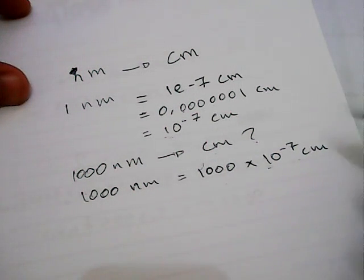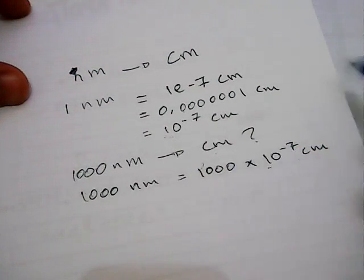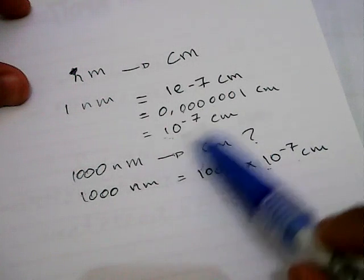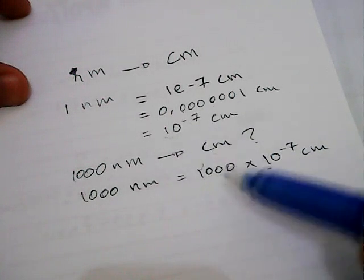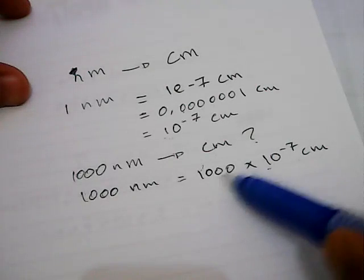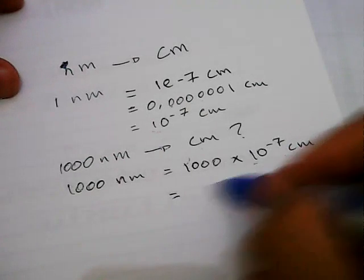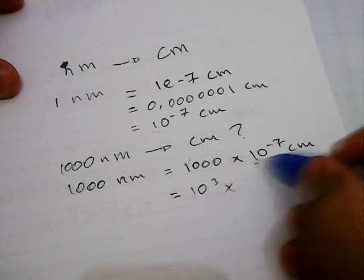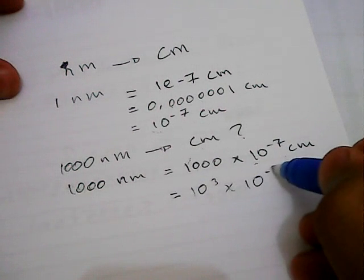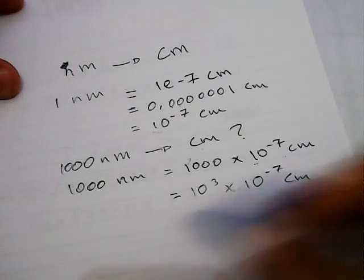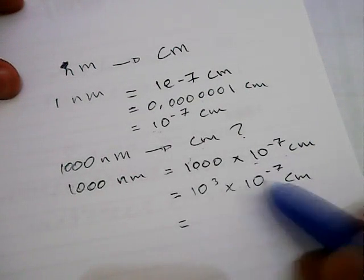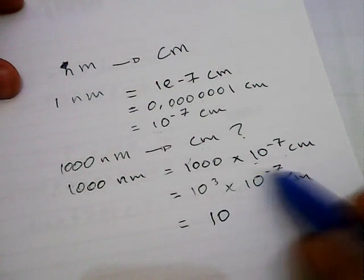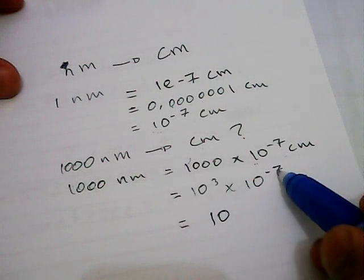Let's go ahead and multiply the number. Because I'm shortening this number over here to 10 power minus 7, we need to convert this number as well. So it's equal to 10^3 multiplied with this number, 10 power minus 7 centimeters. And it's equal to, we multiplied this number, 10 power minus 7 plus 3. So it's equal to 10^-4.